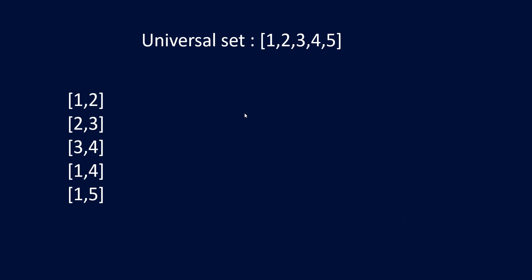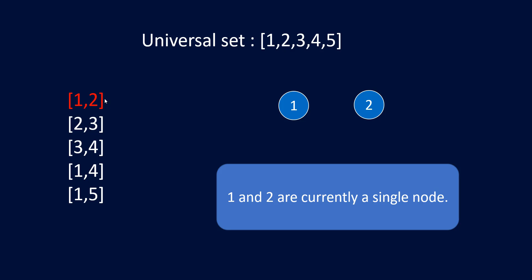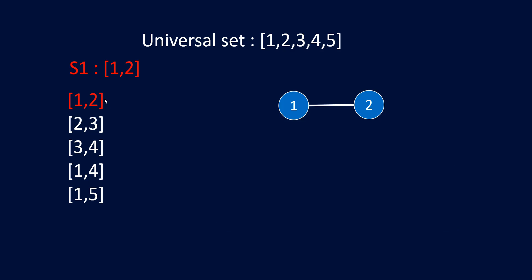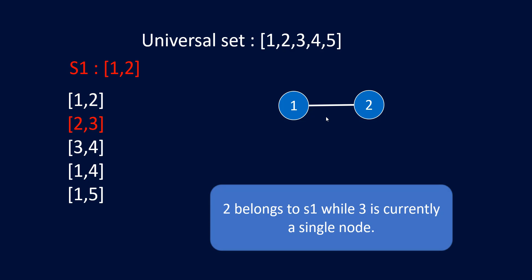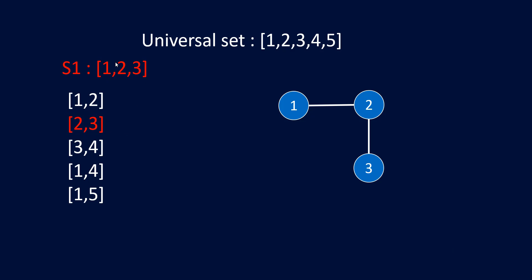Let's take this example with these inputs. This is a universal set of nodes 1 to n. The first edge is (1,2). Initially, nodes 1 and 2 are single nodes not present in any set. So we create an edge and put these two nodes into the same set. Now for edge (2,3), node 2 belongs to set S1 while node 3 is independent. By adding this edge we do a union of (2,3) with set S1. Now all three nodes belong to the same set — all three nodes are connected.